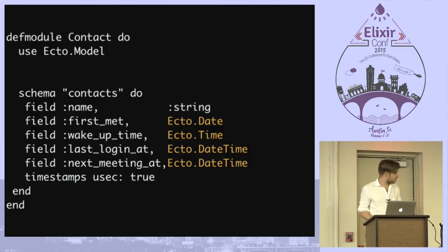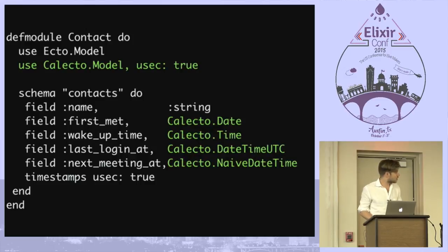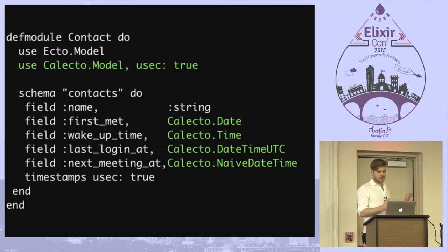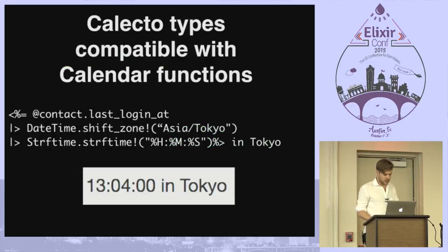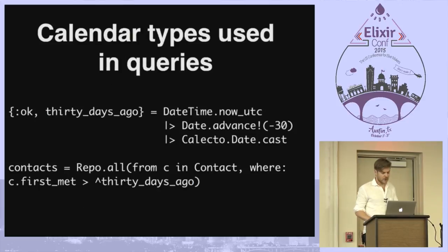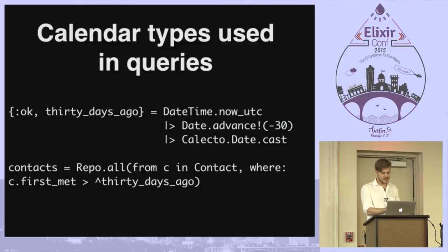Then you have to interact with Ecto. There's a package called Calecto. So if you have these types, you can swap them out for this. All this stuff you do — let's say you use Calendar to parse something — you can actually put that into your Ecto models. You can shift a datetime, use the formatting functions, and if you have a Calendar type you can use it in your queries. As it is now, you have to cast it with Calecto as you see in the third line.